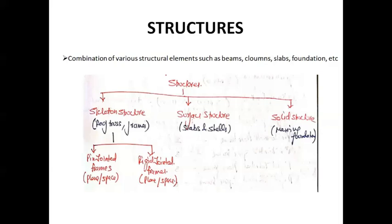In a pin-jointed structure, the joint is hinged, meaning only rotation is allowed — the joint cannot move vertically or horizontally. In a rigid-jointed frame structure, the joints are rigid and cannot move in any direction — neither vertical, horizontal, nor rotational. They are completely fixed.